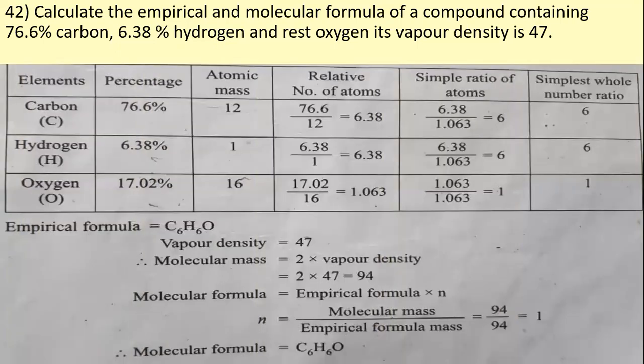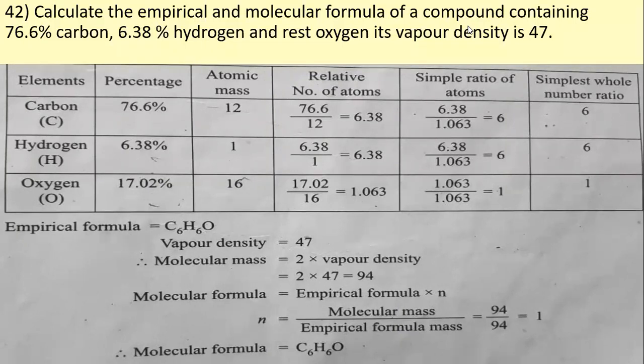Whenever we have to calculate the empirical and molecular formula, it is very easy if you set it up in a tabular column. First, we write the elements in the first column, then the percentage, then the atomic mass in the fourth column — the relative number of atoms.